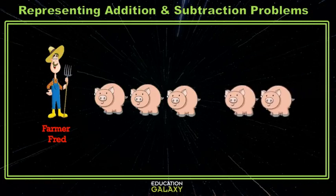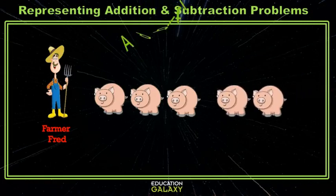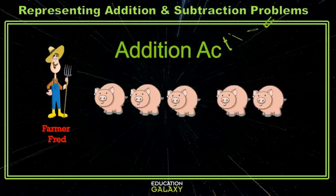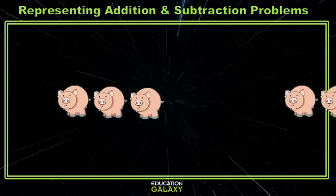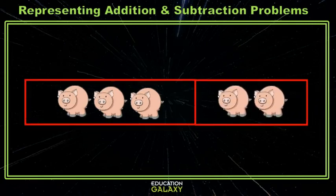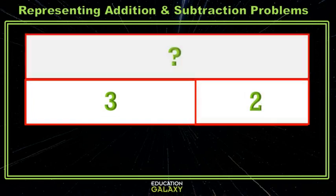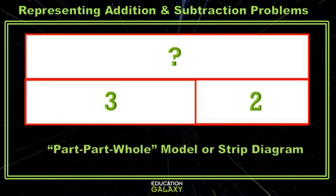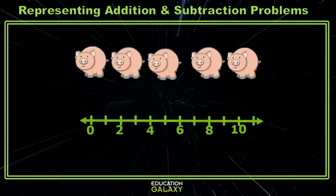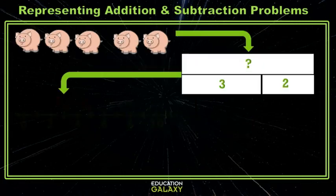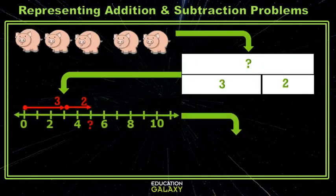Let's look at a simple example. If Farmer Fred has three pigs and he bought two more pigs, this is an addition action. We can represent the situation in three ways: first, we can use a part-part-whole model or strip diagram; second, we could use a number line; and third, we could use an equation.